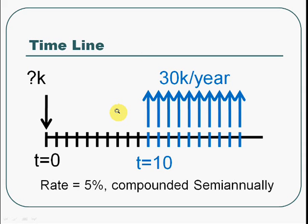So let's draw the timeline and then we will have a better picture. Starting from today, T equal to 0. 10 years later, at T equal to 10, his father will retire. At that time, he will pay his father $30,000 per year continuously every year. The question is how much he has to invest today, and the rate is at 5% compounded semi-annually.